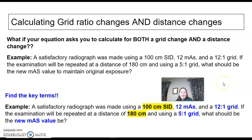Okay, I doubt this will happen to you, but do you have to calculate grid ratio changes and a distance change? This is like a unicorn question, I think, but just in case it happens. A radiograph was made using 100 centimeters SID, 12 mAs, and a 12:1 grid. If the examination will be repeated at a distance of 180 cm and using a 5:1 grid, what will your new mAs value be?